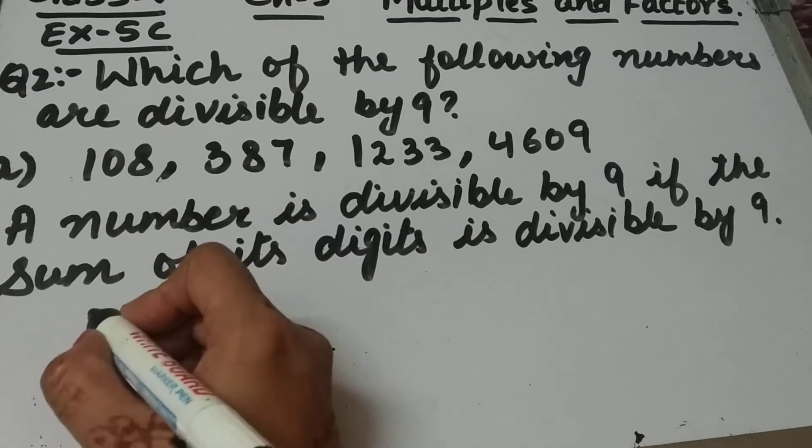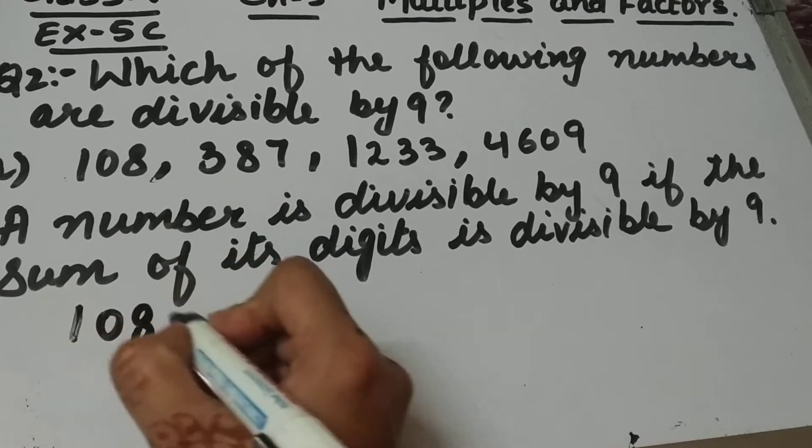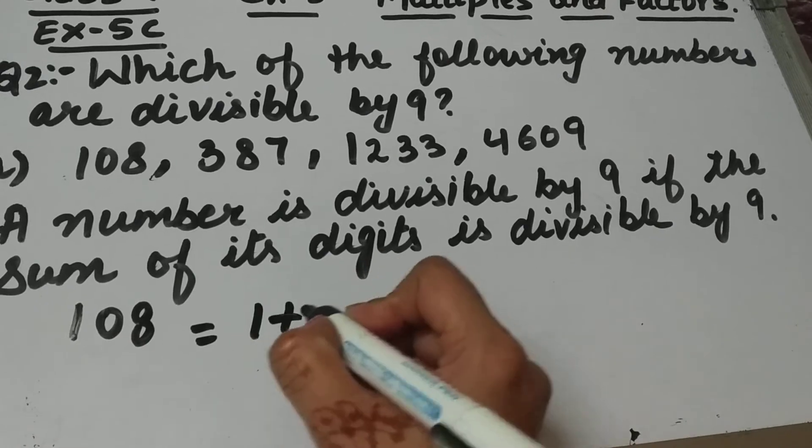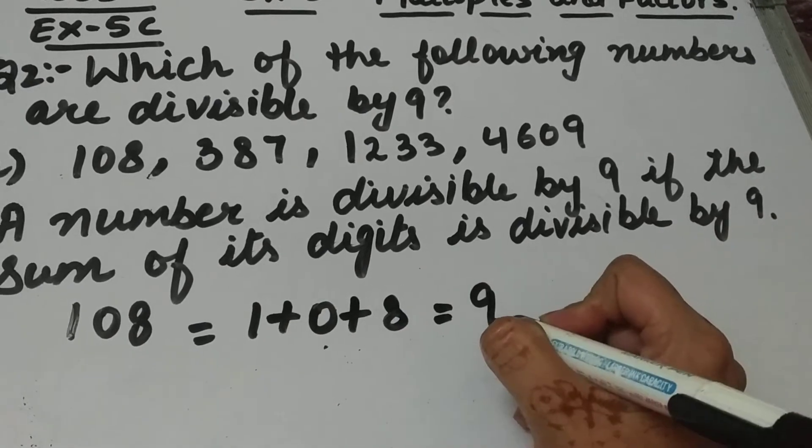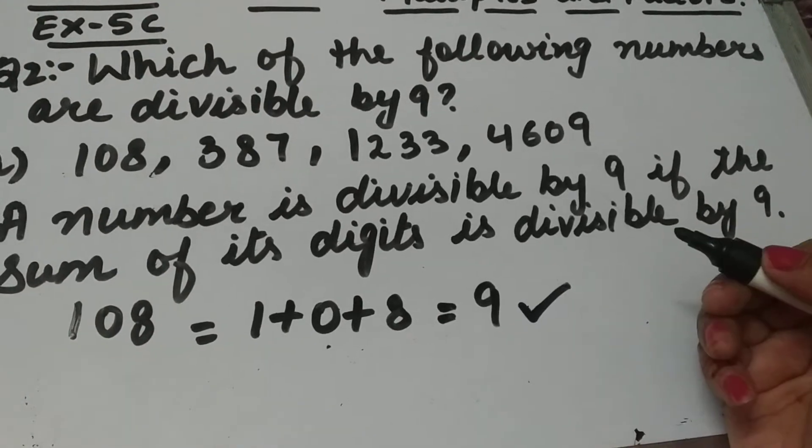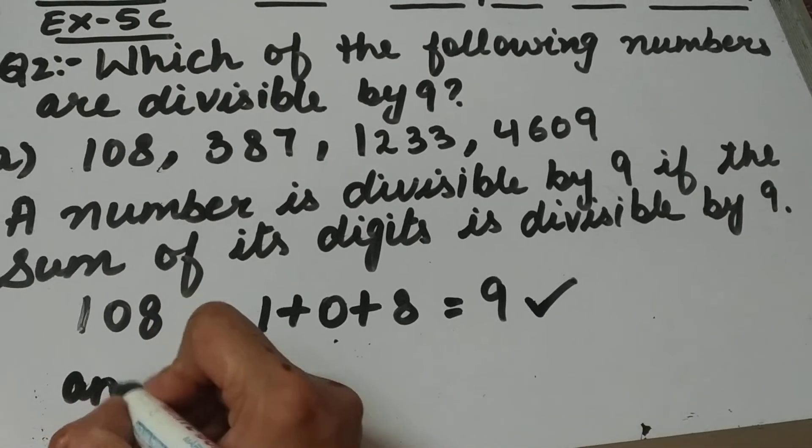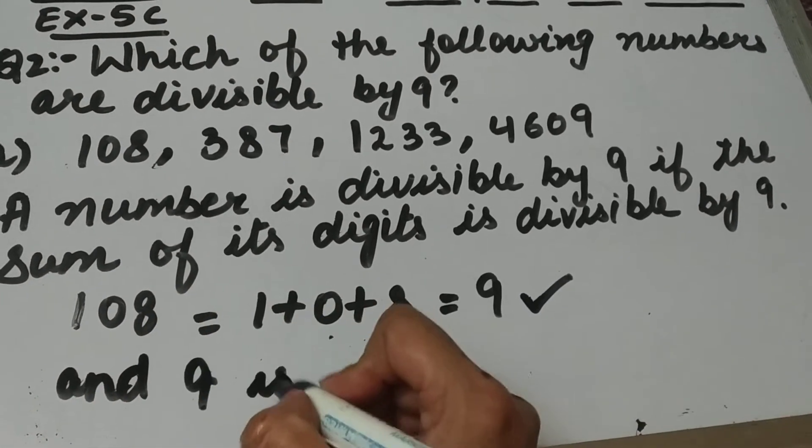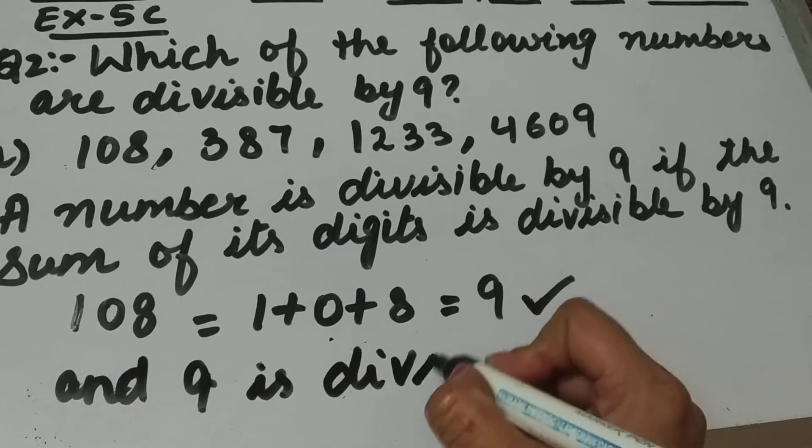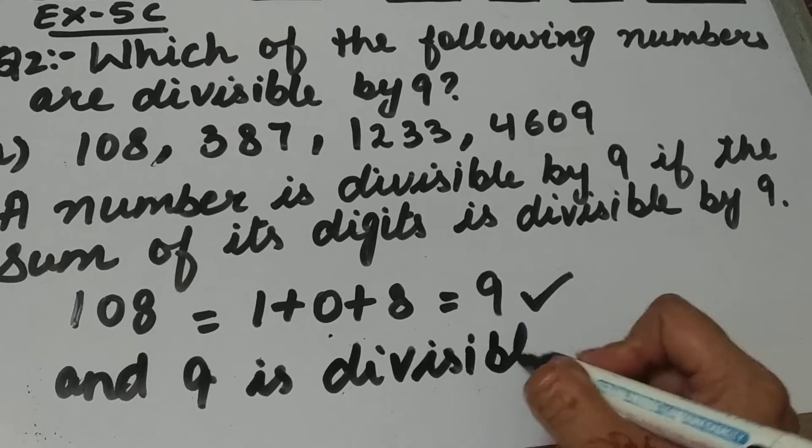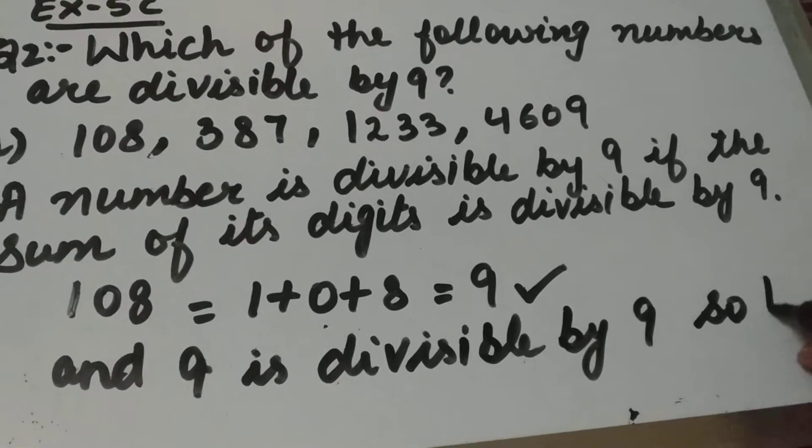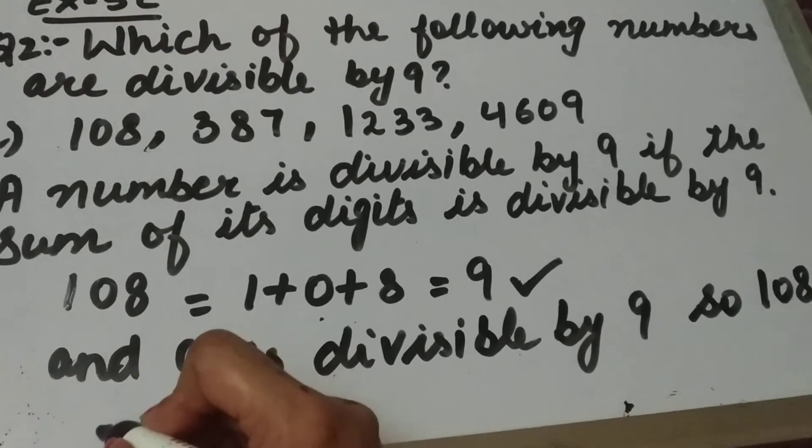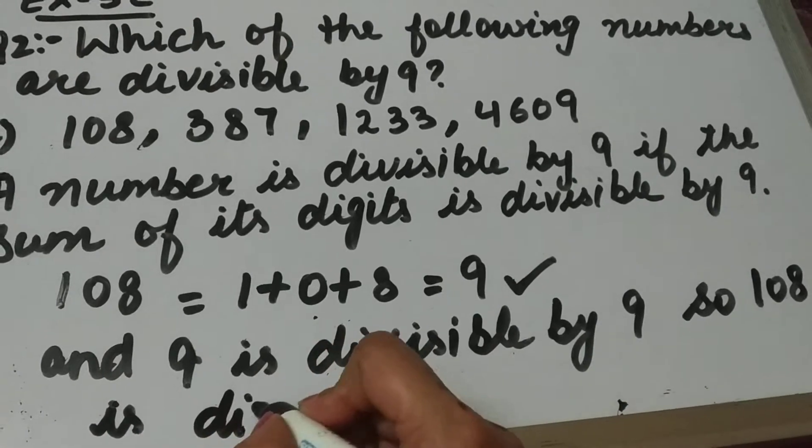The first number is 108. If we add the digits 1 plus 0 plus 8, this equals 9, and 9 is divisible by 9. Therefore, 108 is divisible by 9.